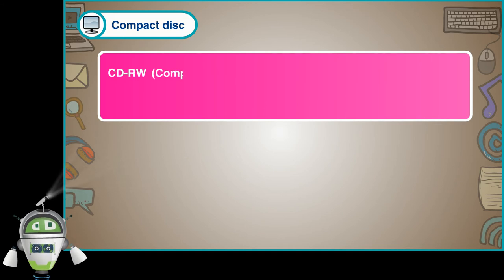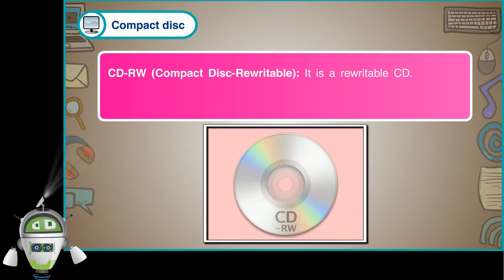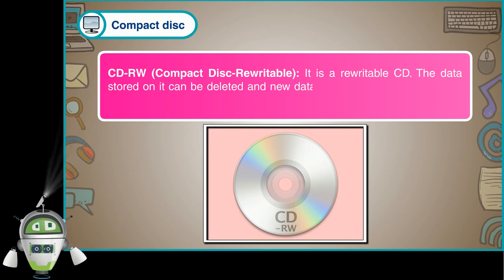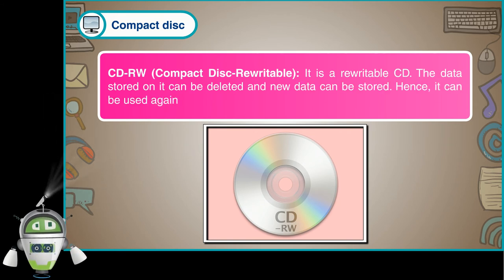CD-RW, or Compact Disc Rewritable, is a rewritable CD. The data stored on it can be deleted and new data can be stored. Hence, it can be used again and again.